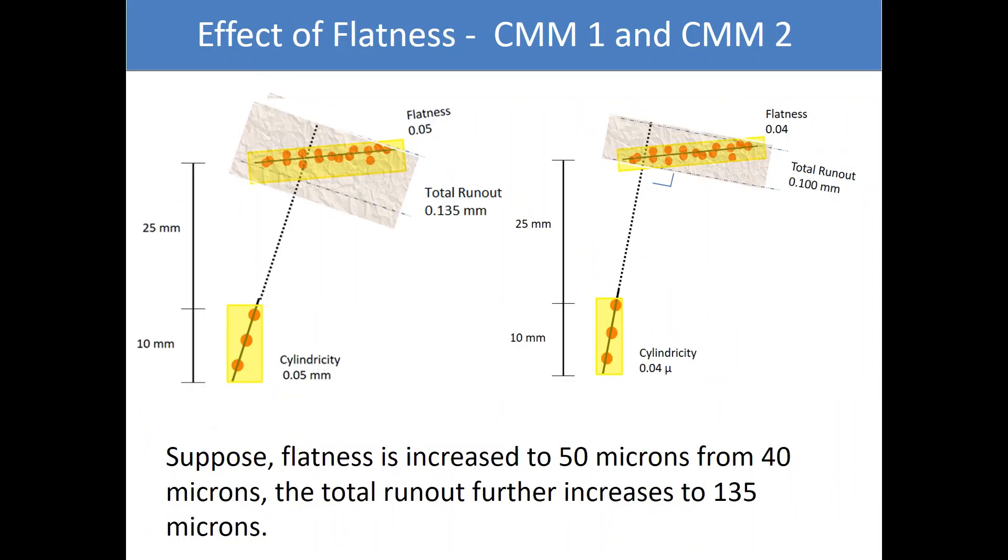Suppose flatness is increased to 50 microns from 40 microns. The total run out further increases to 135 microns.